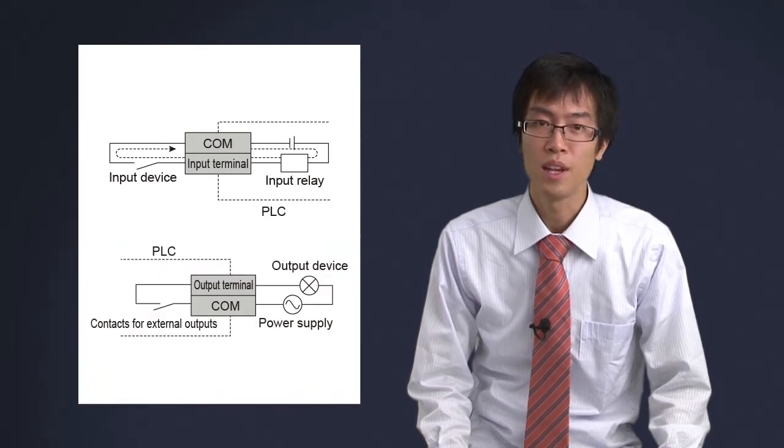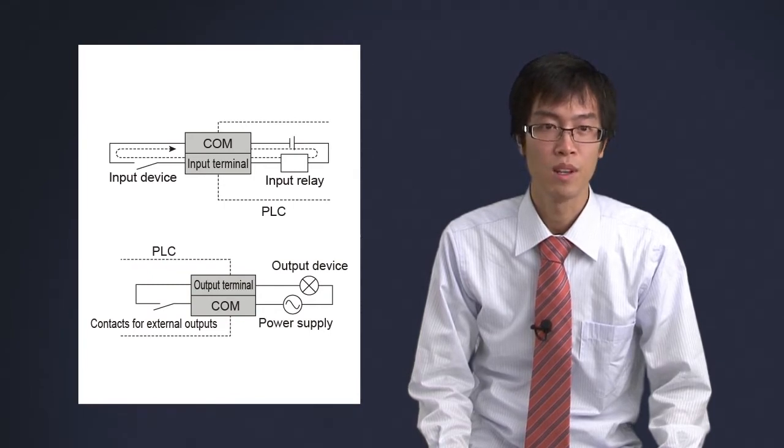Similarly, an output device works when it is connected between a terminal and its COM terminal. Note that you need to prepare an external power supply used to drive the output device. In this way, DC or AC devices can be controlled according to COM terminal.